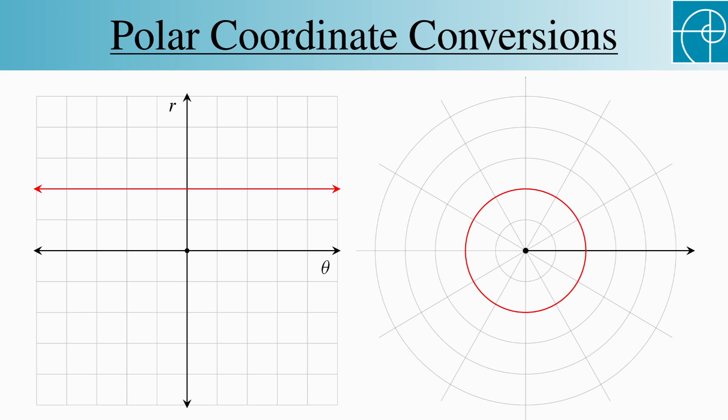Remember that this line is actually wrapped infinitely many times around this circle. It also gives us a correspondence between vertical lines in the rectangular system and rays emanating from the origin in the polar system.